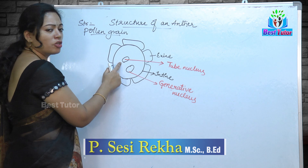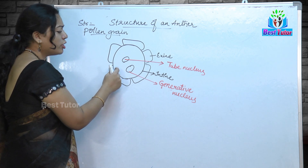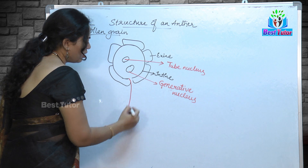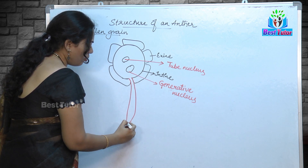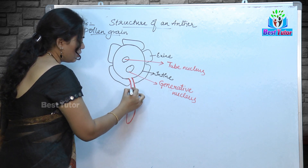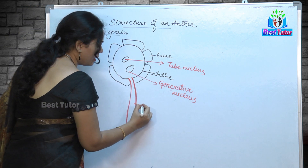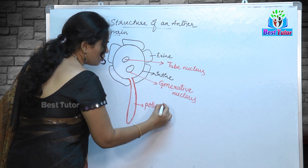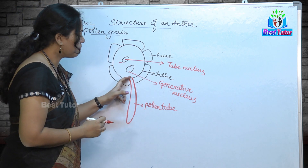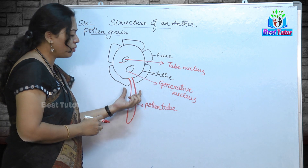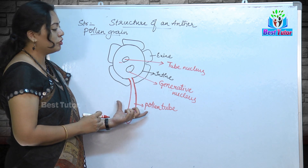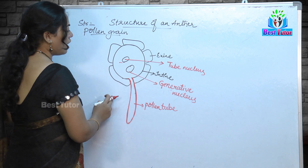The tube nucleus is the one which ruptures the intine of the pollen grain and forms a tube-like structure. We call this the pollen tube. The tube nucleus forms this pollen tube through which the pollen grain can reach the gynoecium and ovary during the fertilization process after pollination.